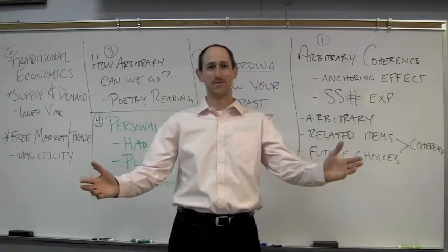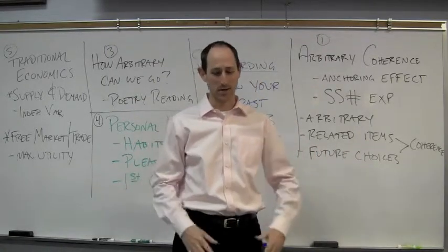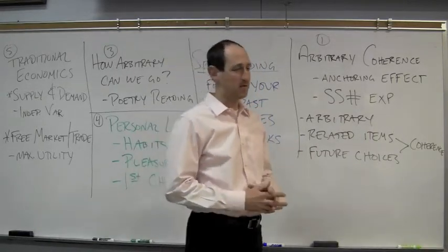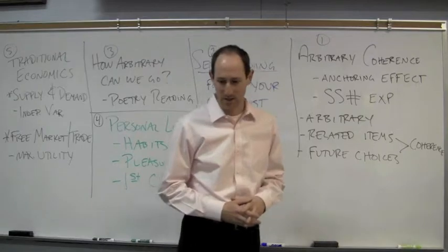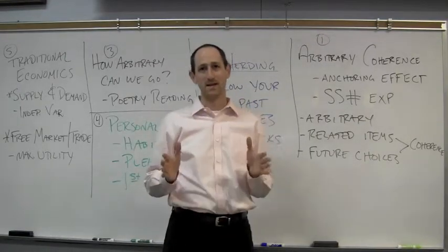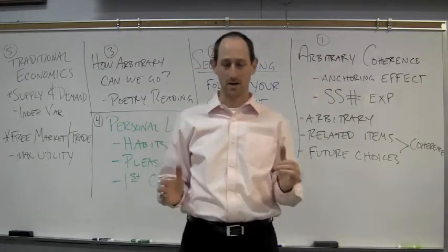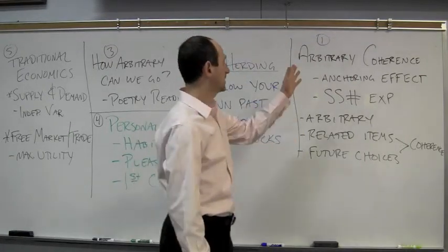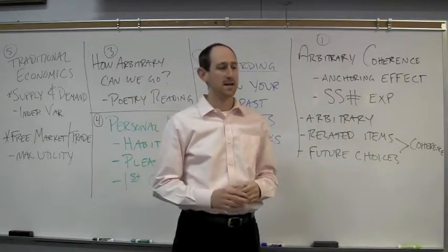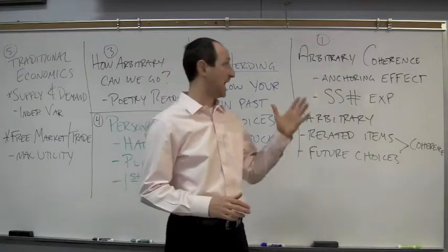Welcome to the very first online lecture in Psychology 2. This is Chapter 2 of Predictably Irrational, pages 25 to 50. The main idea of this chapter is called arbitrary coherence, which is an extension of an idea from the last book, Stumbling on Happiness — the anchoring effect.